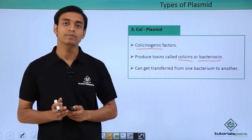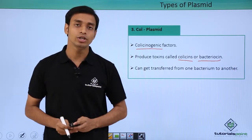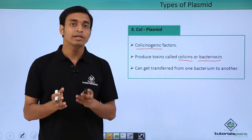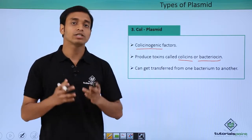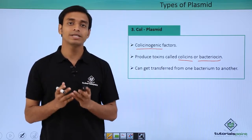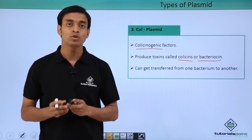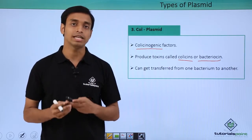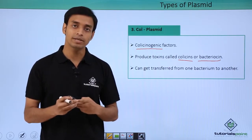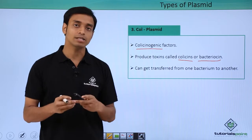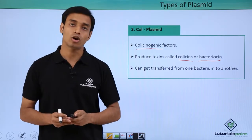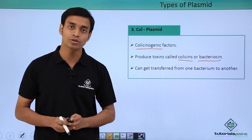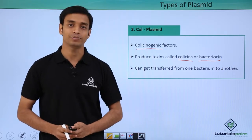In this video we have talked about plasmids — what they are as extra-chromosomal DNA — and the different types of plasmids: the F plasmid, the R plasmid, and the Col plasmid. I hope you have understood and liked this video. Thank you.